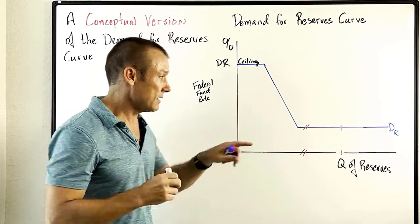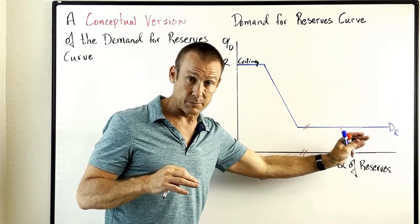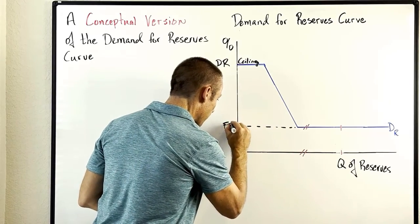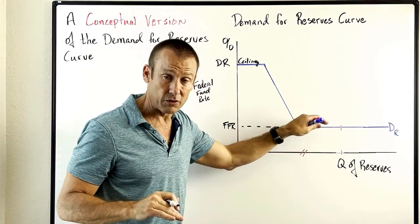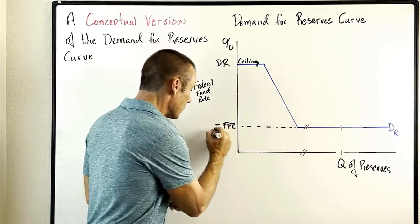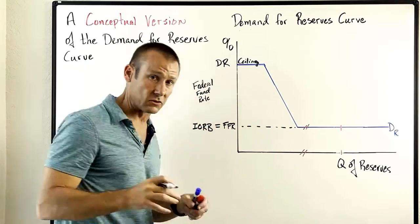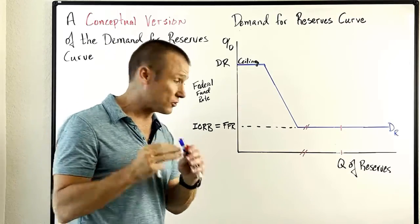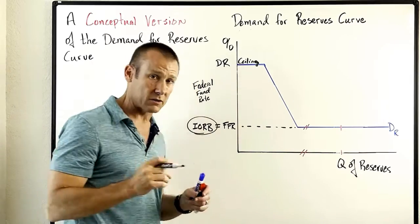What is important is this flat portion, because that's where the supply of reserves curve is intersecting the demand for reserves, and that's what gives us our federal funds rate. The question is: what gives us this flat portion of the curve? The answer is the new number one policy tool — the interest rate on reserve balances. That interest rate on reserve balances performs a couple of functions to determine the federal funds rate, and this is now our key policy tool.